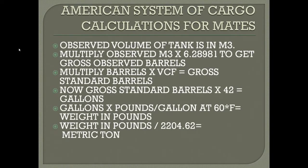Since you know the volume of the tank, which will be in cubic meters, you have to multiply it by 6.28981 to get the Gross Observed Barrels. Now you multiply that by the VCF to get the Gross Standard Barrels. Gross Standard Barrels multiplied by a factor of 42 will give you gallons.